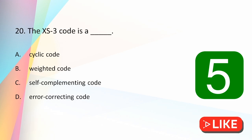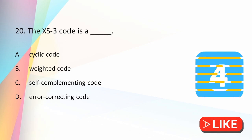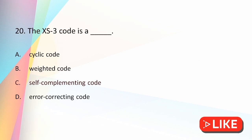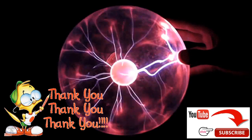The XS3 code is a: cyclic code, weighted code, self-complementing code, or error correcting code? The answer is self-complementing code. XS3 code is obtained by adding 3 (or 0011) to the BCD code. XS3 code is a self-complementing code and it is not a position weighted or weighted code. That is all for this video. Thank you for watching.